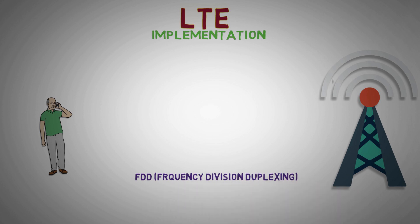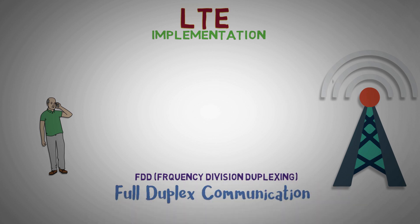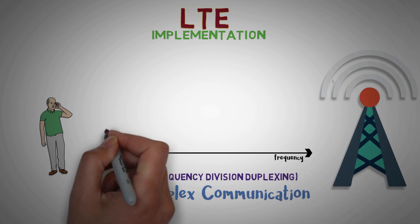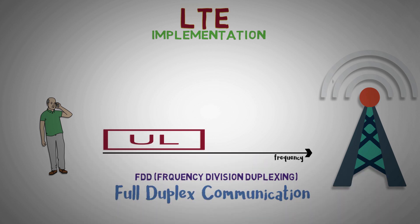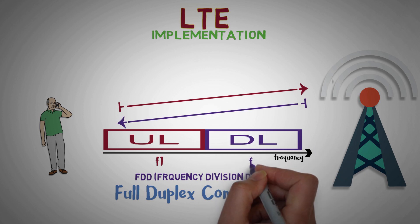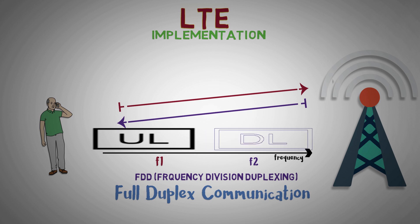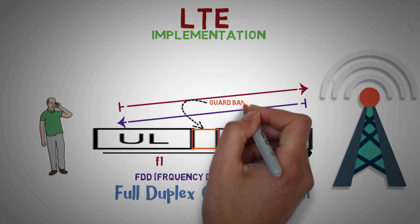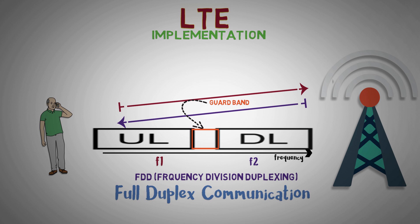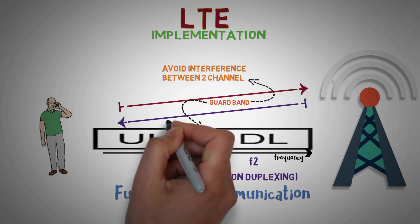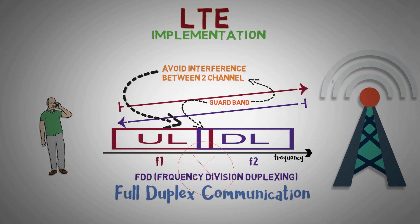Frequency Division Duplexing (FDD) is a method for establishing a full duplex communications link that uses two different radio carrier frequencies for transmitting (uplink) and receiving (downlink). Both channels are separated by a defined offset frequency, also known as a guard band, whose main purpose is to prevent interference between the uplink and downlink channels.